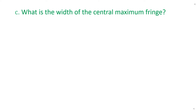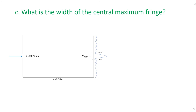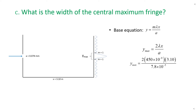To find the width of the central maxima, we need to understand exactly what that means. Using the diagram, we can see that the distance we are trying to find is also the distance between the two first order minima. This means we need to find the distance between the center and the first order minima and double it. To solve for y, you would use y equals m times wavelength times x divided by a. However, because the width of the central maxima equals the distance between the first order minima, we account for that with y-max equals 2 times wavelength times x divided by a. Solving, we find the width of the central maximum fringe is 0.0358 meters, or 3.58 centimeters.